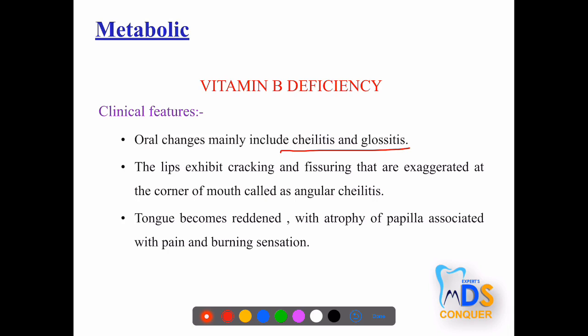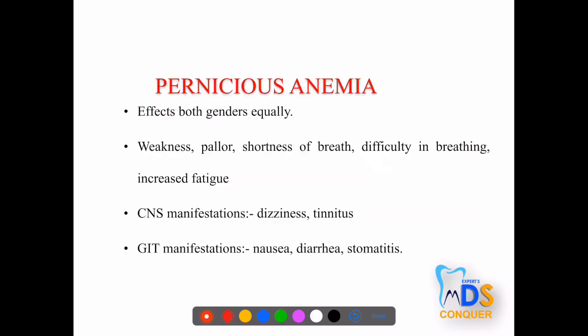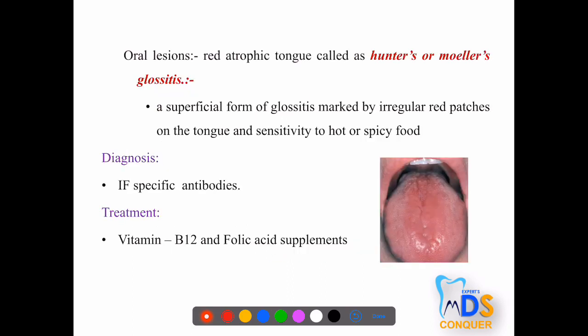Under metabolic lesions, vitamin deficiency causes cheilitis and glossitis. Riboflavin deficiency causes the tongue to become red with atrophy of papillae and severe burning sensation. In pernicious anemia, oral findings include a red atrophic tongue called Hunter's or Moeller's glossitis, along with systemic features like weakness, pallor, shortness of breath, dizziness, tinnitus, and GIT manifestations.